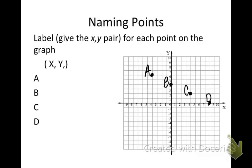We learned in concept 16 about ordered pairs. One of the ways we can represent them is as an x-y pair in parentheses, and we can also represent them on a graph. I need you to be able to look at a graph, pick a point off that graph, and give me the ordered pair for that point. So if I look at point A, I went to the left 4, and then I went up 6.